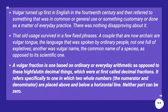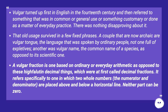Vulgar turned up first in English in the 14th century and then referred to something that was in common or general use, or something customary or done as a matter of everyday practice. There was nothing disapproving about it. That old usage survived in a few fixed phrases. A couple that are now archaic are vulgar tongue — the language spoken by ordinary people, not one full of expletives — and vulgar name, the common name of a species as opposed to its scientific one.